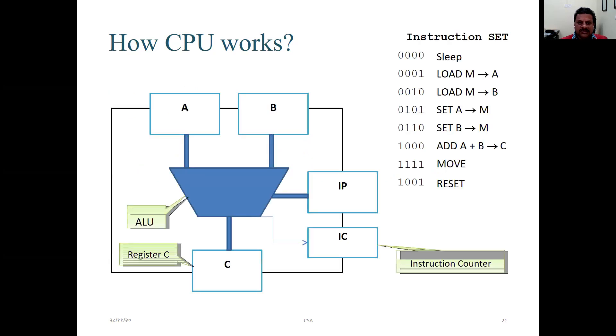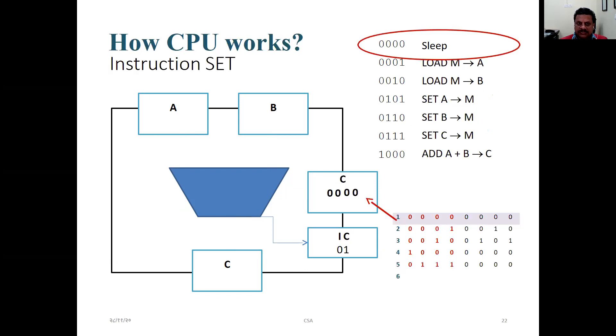ALU, AB, that is IP, IC, register C and instruction set slip. Load M and M moves to A. Then M moves to B. M is here memory. Then A is set as memory 1, B is set as memory 2 and then both are added. That is A plus B and it goes to C. And then it moves to counter, register and finally process output. This is how CPU works.